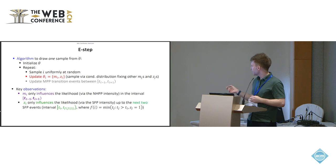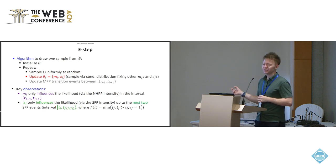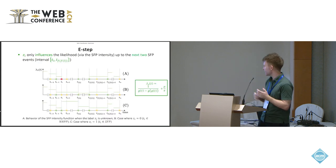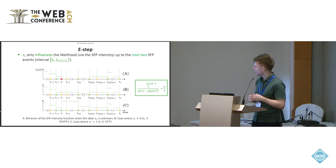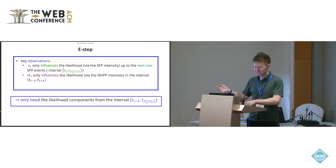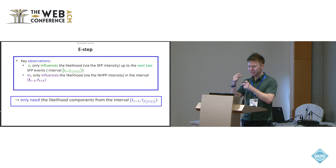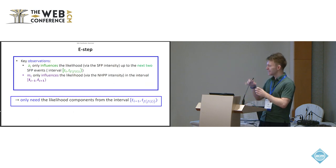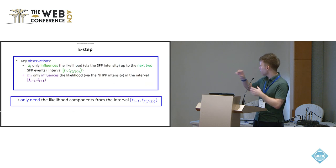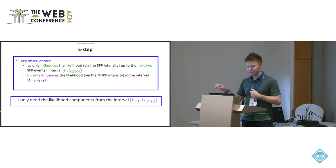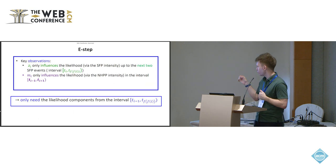The second thing that allows us to do this here is the fact that the label actually only influences the likelihood through the SFP function up to the next two SFP events. And if you remember, this is based on the formula for the SFP intensity, which is one over the distance between the last two SFP events. So basically, we can only influence into the future up to the next two SFP events. So if we take both of the conclusions that we had so far and put them together, that means that when we calculate the conditional distribution that's required to update each of the components around the T_i, we only need to compute the likelihood between the last observed timestamp, regardless of what it was, and the next two SFP events. So it's a small part of time.